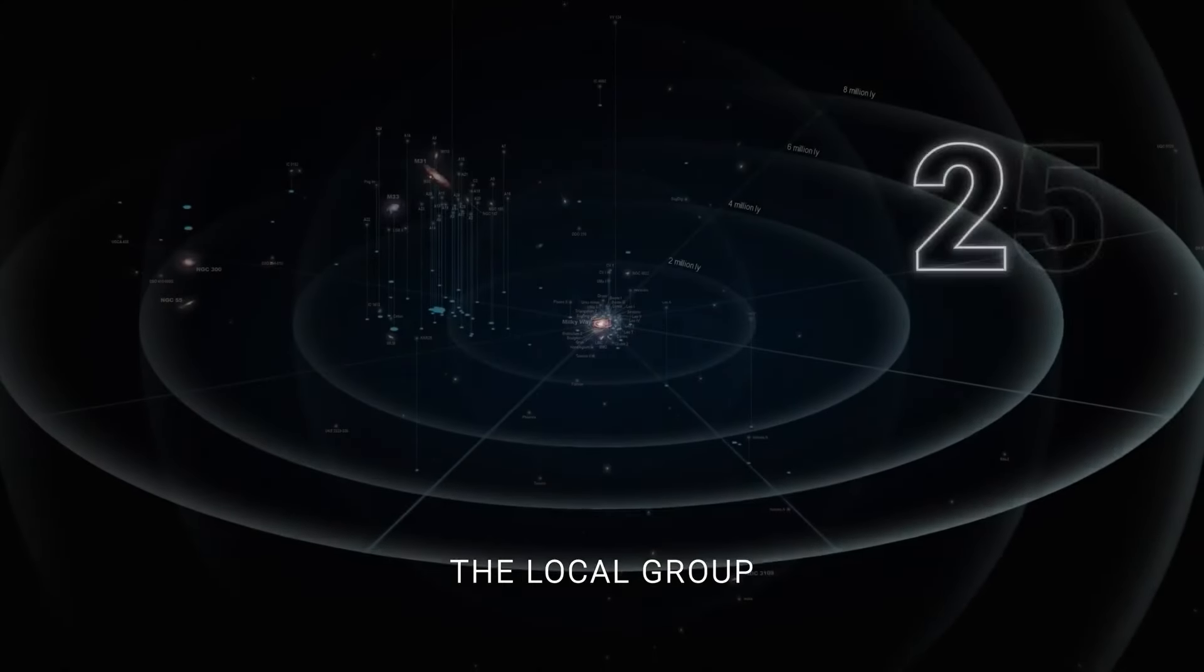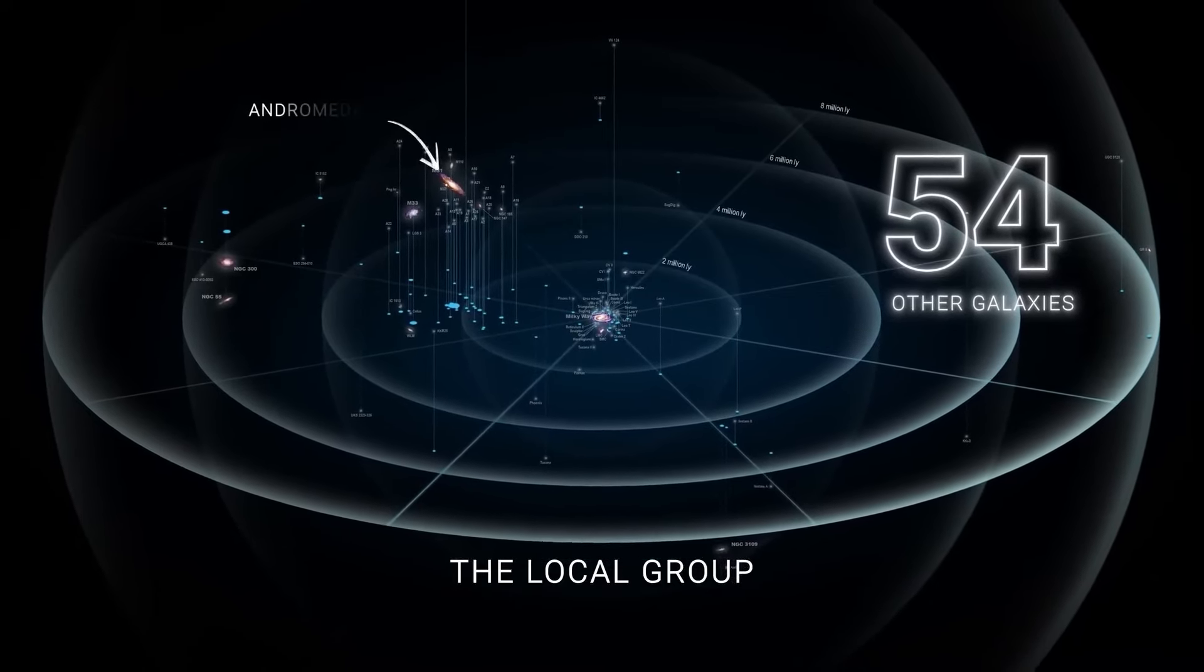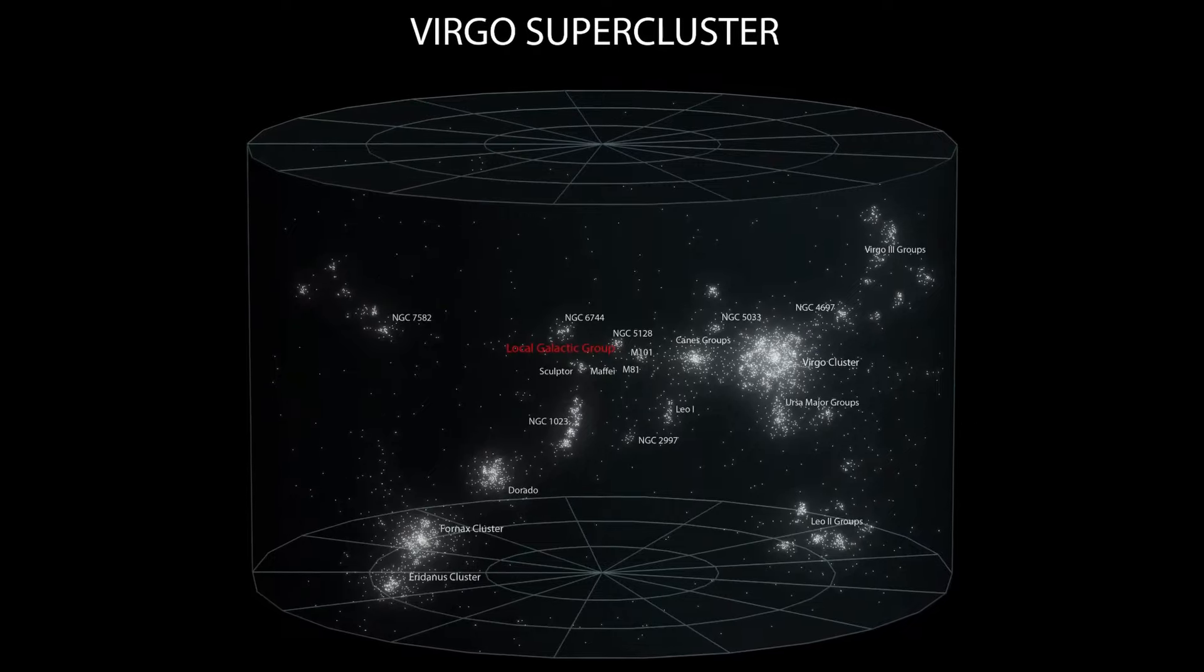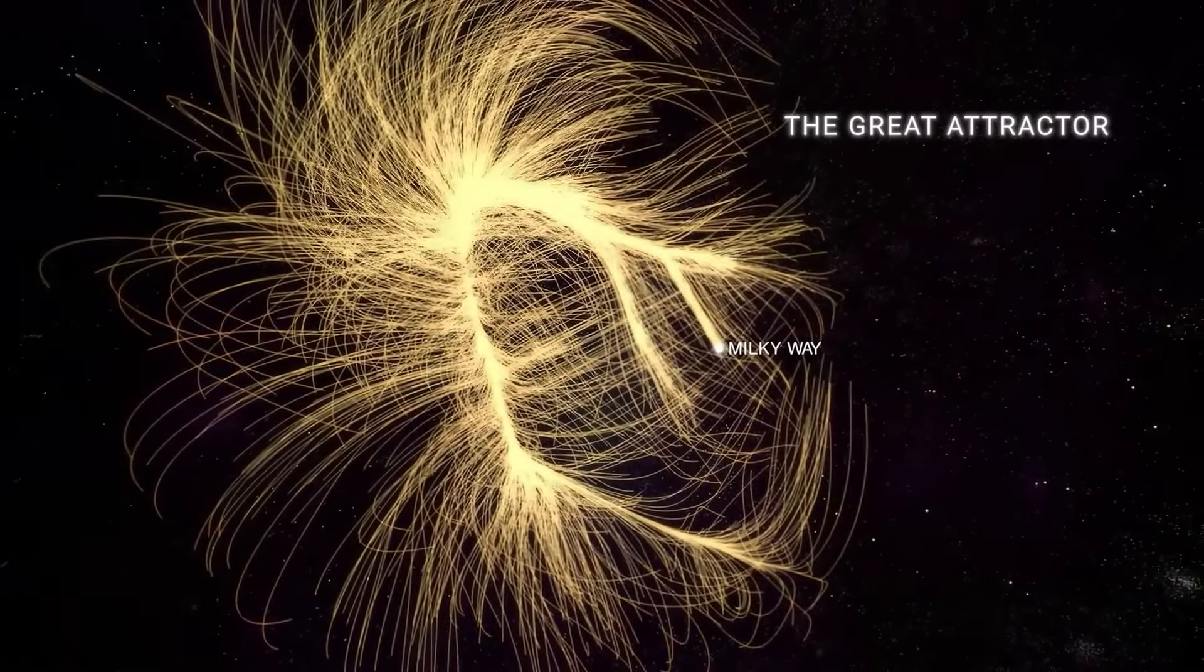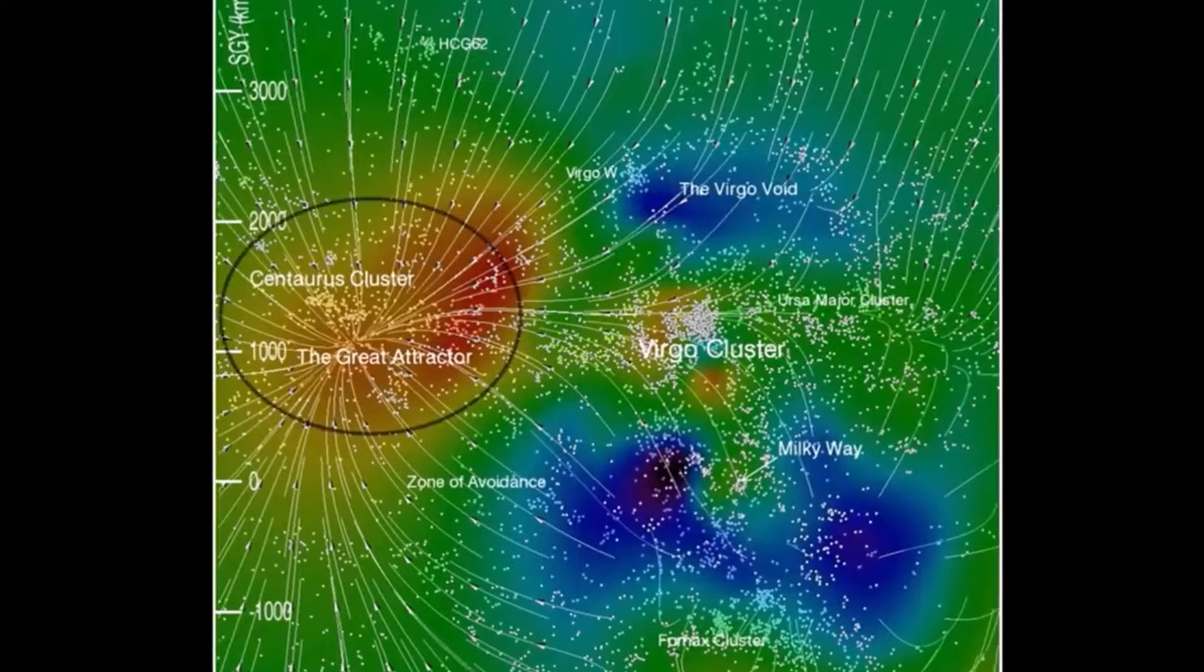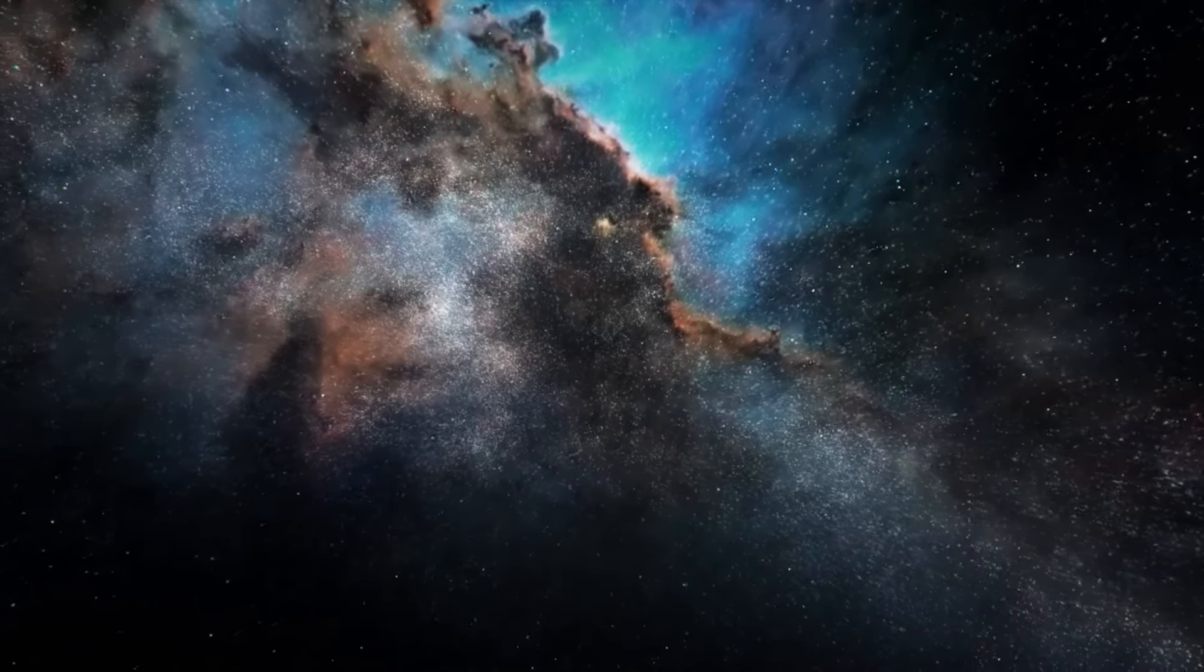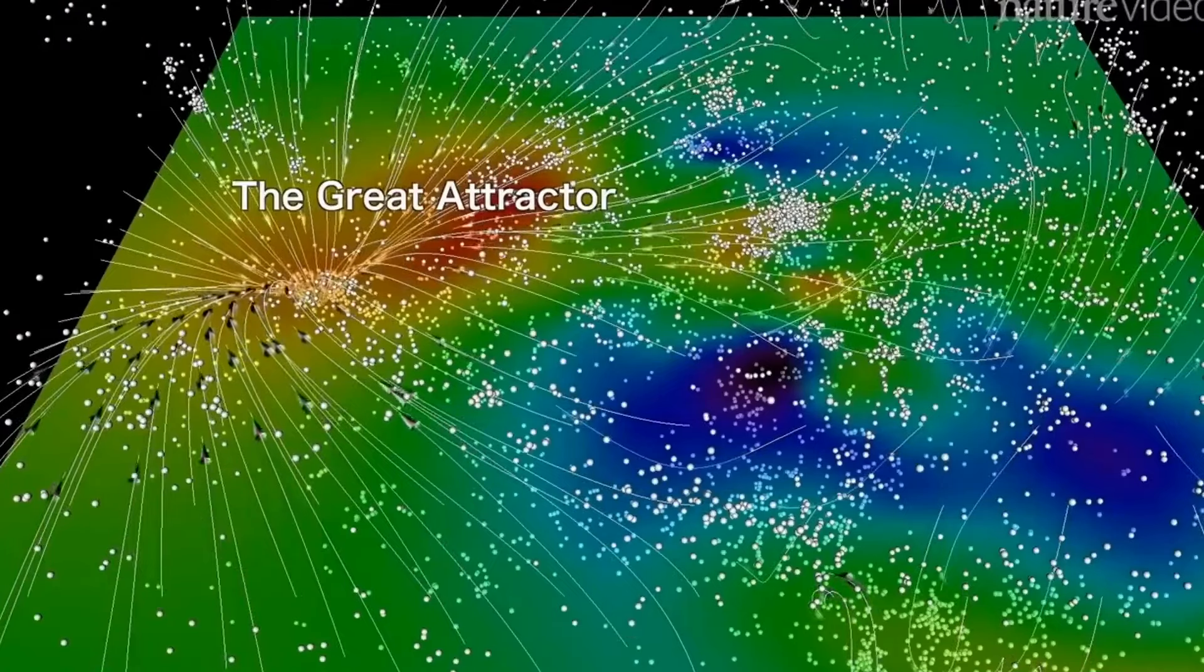The Milky Way galaxy is also part of a larger group of galaxies known as the Local Group. The Local Group is itself part of the larger Virgo supercluster, which is a massive structure containing thousands of galaxies. The Virgo supercluster is moving towards a mysterious region called the Great Attractor. The Great Attractor is located in an area of space that is blocked from view by the stars and gas of the Milky Way. It is the central gravitational point of our local area of the universe.